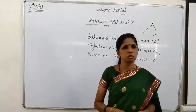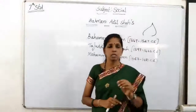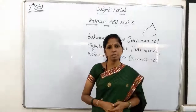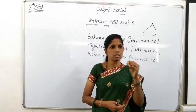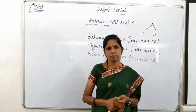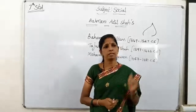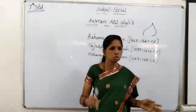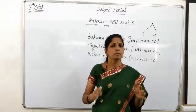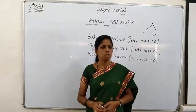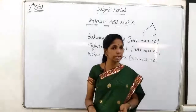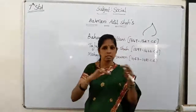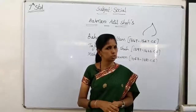The first prominent architectural contribution of the Bahmanis is the Jamia Masjid of Kalburgi, built by Muhammad Shah. The meeting hall with small domes was the main attraction. Tombs of the sultans are also in Kalburgi, constructed in domed structures.